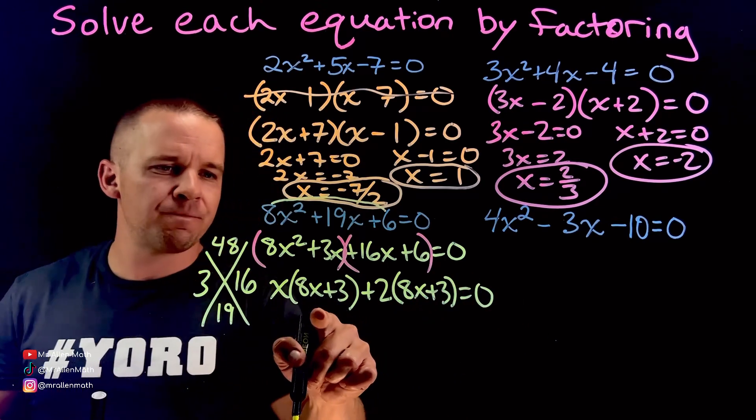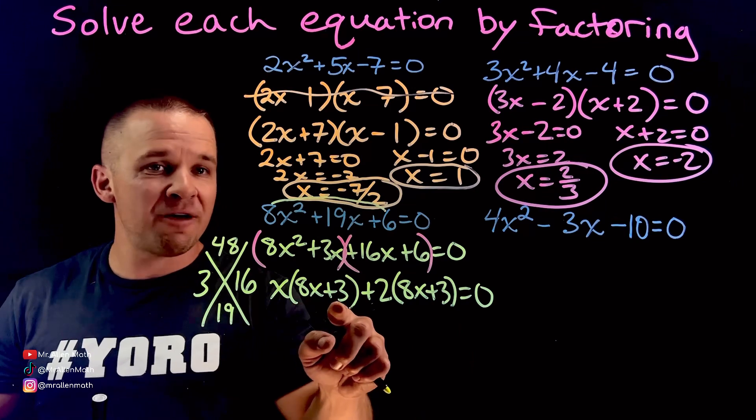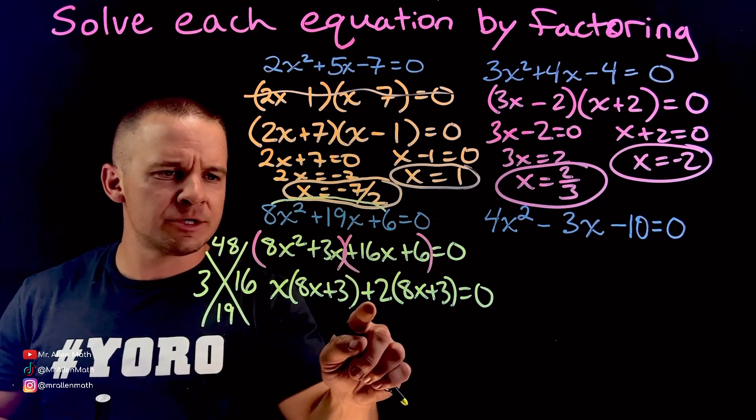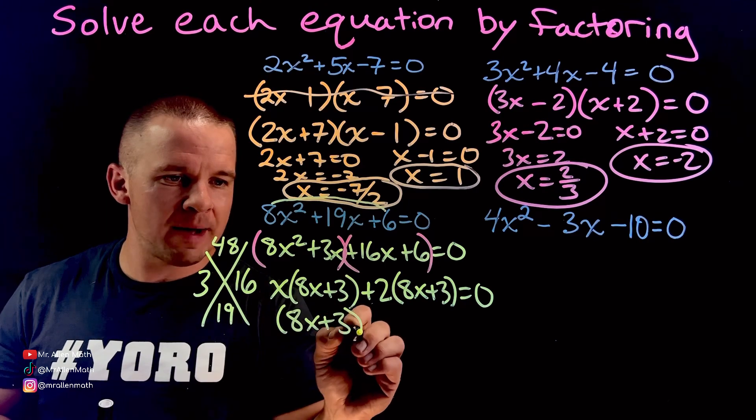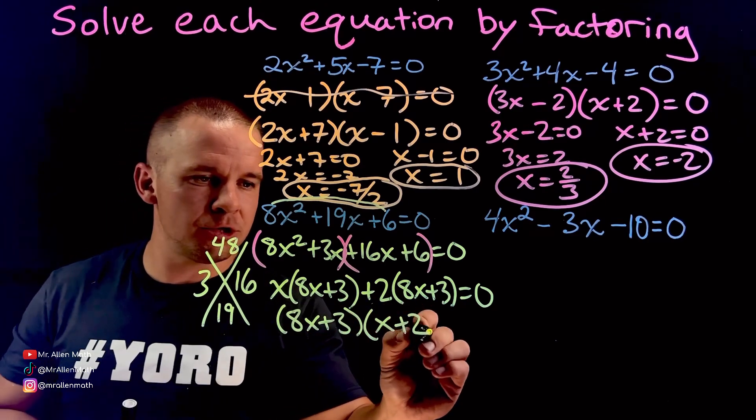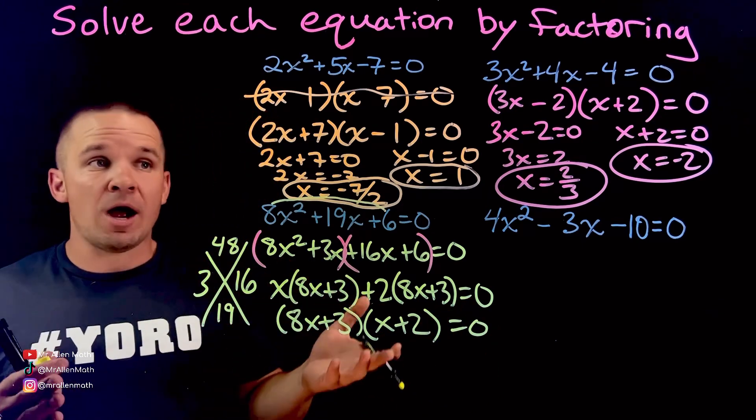Holy guacamole. These two are the same. This is one big old term. This is one big old term. They have this in common. Sorry, I'm smudging. So 8x plus 3 will come out. x plus 2 is left over. Those are my two factors. And there we are. We're factored form.